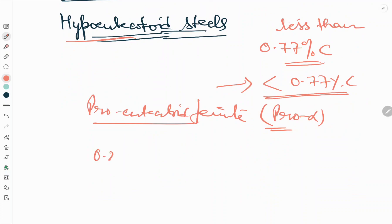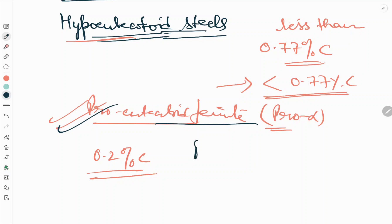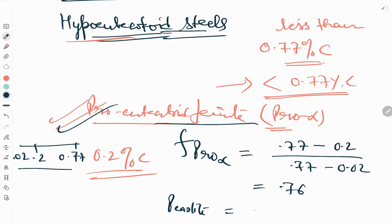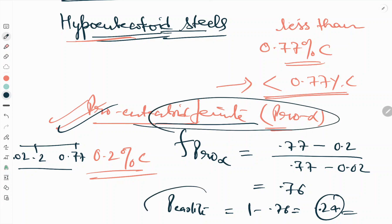For example, if the hypoeutectoid steel contains 0.2 percent carbon, the fraction of pro-alpha is calculated as: (0.77 minus 0.2) divided by (0.77 minus 0.02), which gives approximately 0.77. The fraction of pearlite is then 1 minus 0.77, that is 0.23. This is how we calculate, for any given carbon percentage within the hypoeutectoid range, the fraction of proeutectoid ferrite and pearlite.